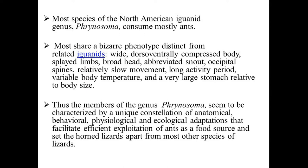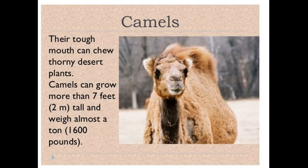Phrynosoma shares a distinct phenotype including splay limbs, broad head, abbreviated snout, occipital spines, relatively slow movement, long activity period, variable body temperature, and a very large stomach relative to body size. Members of the genus Phrynosoma are characterized by a unique constellation of anatomical, behavioral, physiological, and ecological adaptations that facilitate efficient exploitation of ants as a food source, setting the horned lizard apart from other lizard species.